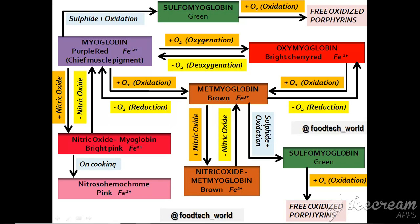The next topic is meat pigments. Understanding meat pigments and their color changes is very essential in meat processing. The chief muscle pigment is myoglobin, which is purple-red in color when not carrying oxygen. When exposed to oxygen it becomes oxymyoglobin, which is bright cherry red. When oxymyoglobin undergoes deoxygenation it reverts to myoglobin — this is a reversible process.